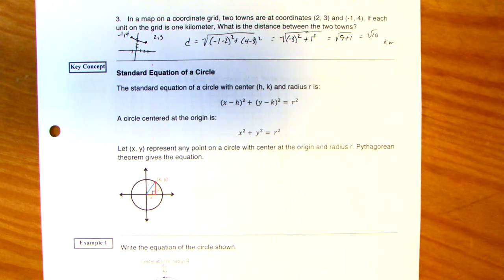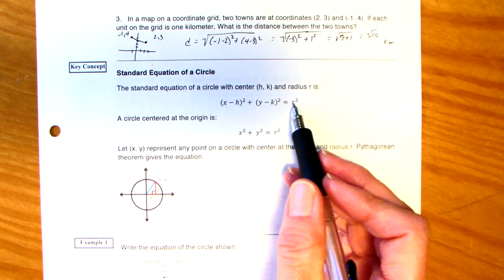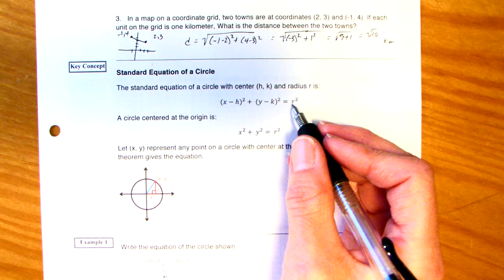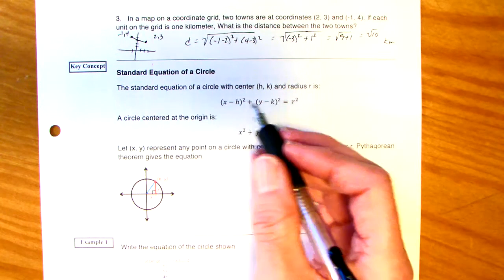Negative 1 minus 2 is a negative 3 squared, but we know that that negative is going to go away. Plus 1 squared. So, we have the square root of 9 plus 1. That's the square root of 10. That's the exact value. It's about 3 point something kilometers. Here we go. A circle.